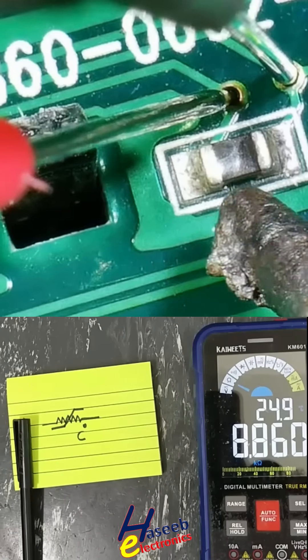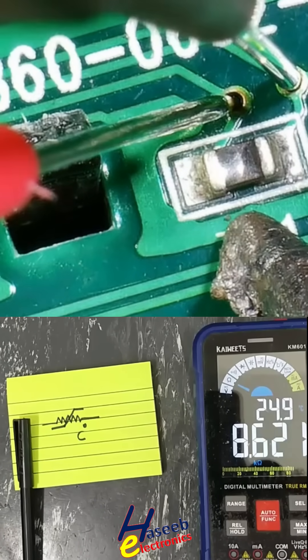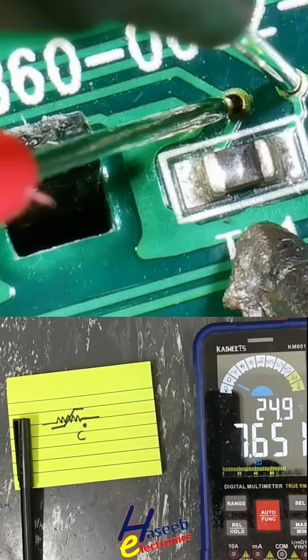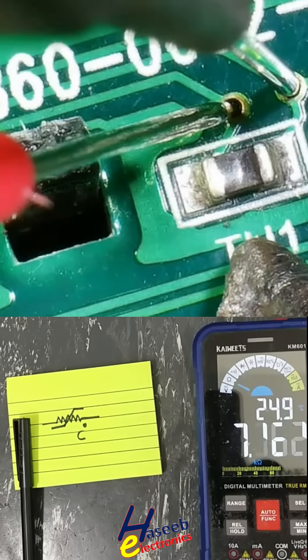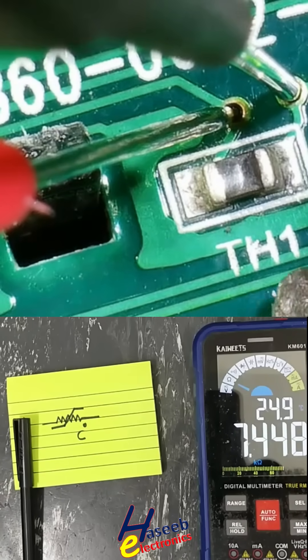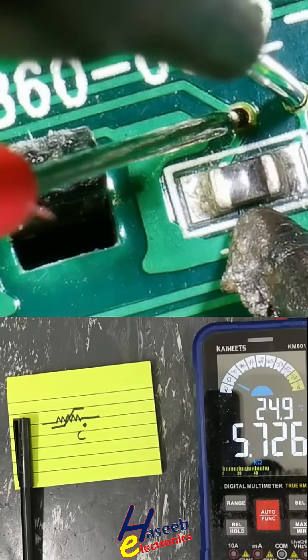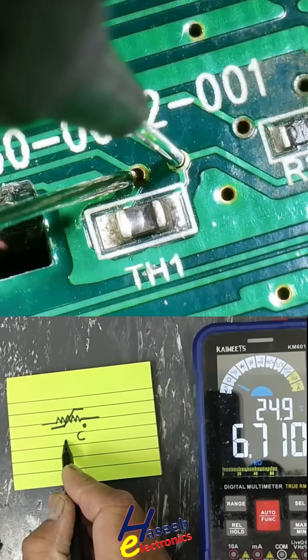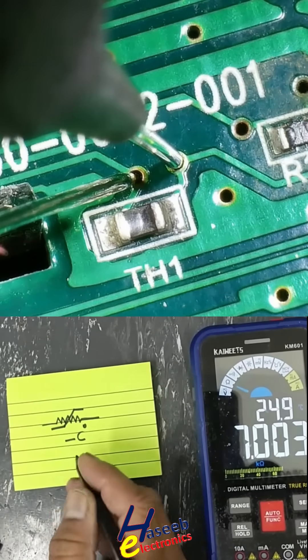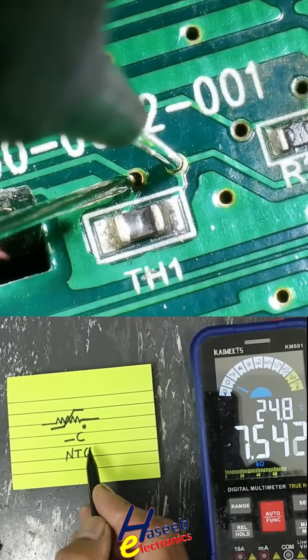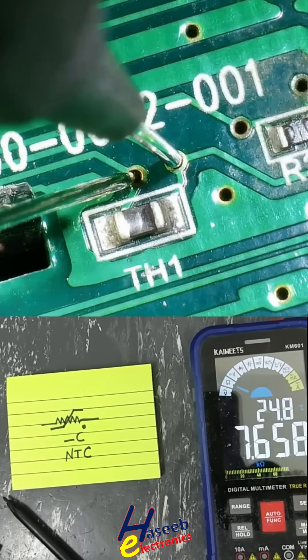Now I will increase its surrounding temperature. When I increase the temperature, the resistance is decreasing. This component has negative response. That is NTC: temperature increasing, resistance decreasing.